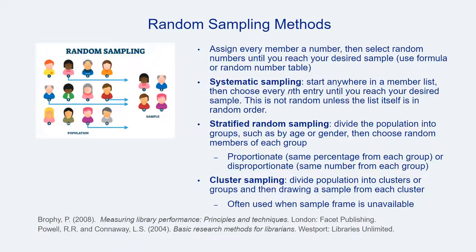There are a variety of ways to achieve a random sample or a proxy approximation of one. To achieve a random sample, a sampling frame of an entire population is necessary; each individual is assigned a number, and random numbers are selected until you reach your desired sample size. Using a formula designed for this purpose or a random number table is standard practice. In systematic sampling, selection could begin anywhere on a list and then every ninth, fifteenth, or some other numbered individual might be selected until the desired sample size is reached. This approximates random sampling, but is not the same thing.